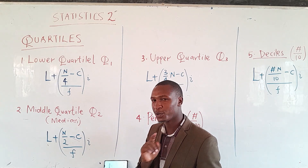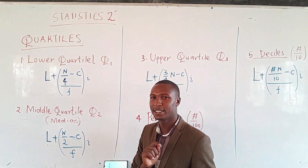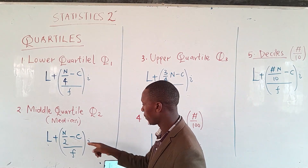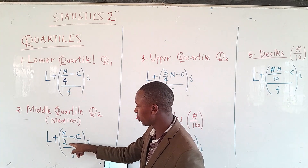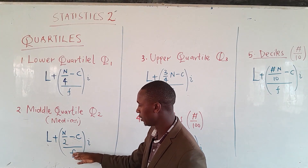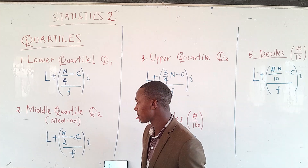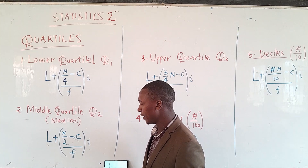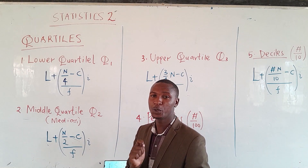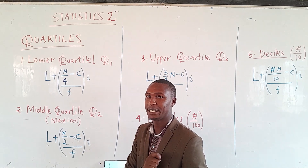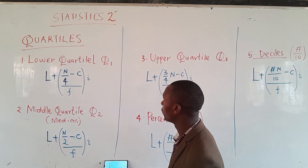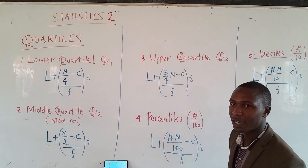For the middle quartile, Q2, notice that this formula is exactly the same as the formula for finding the median. The median of a given data is given as L plus (n/2 minus c) divided by f, multiplied by i. This means that Q2, or the middle quartile, is known as the median — the formula for the median is what we call Q2.